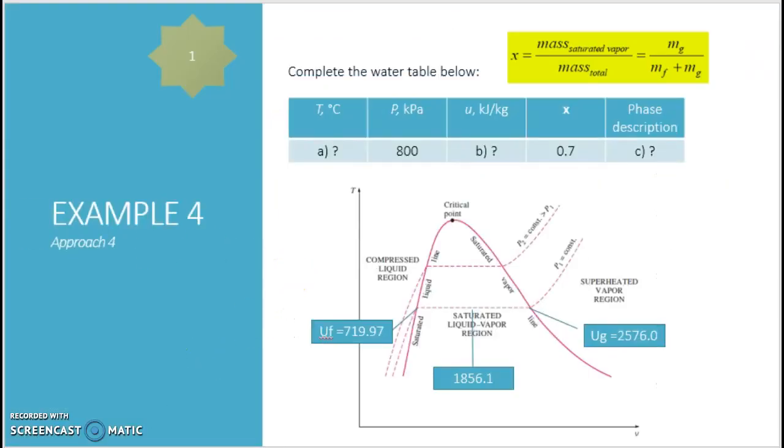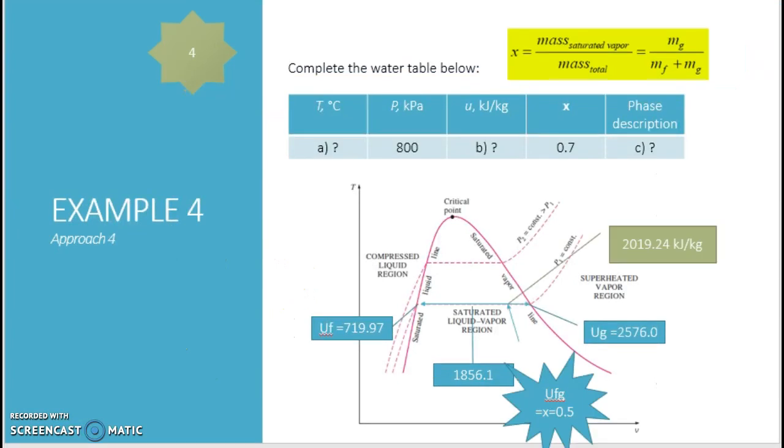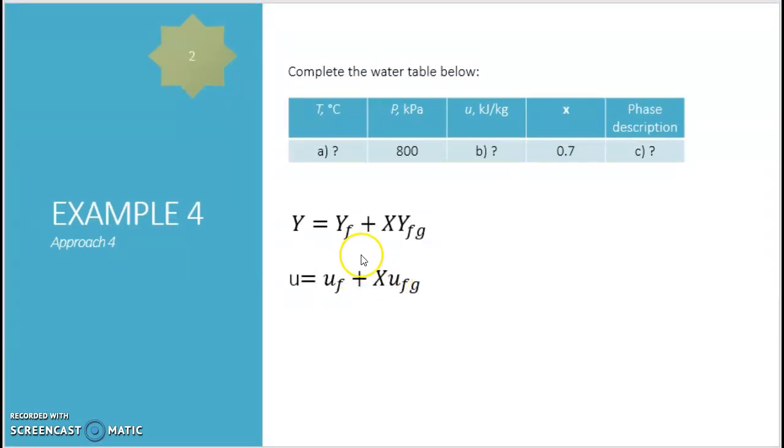Step 2. What you will need to do is you need to make use of this general equation. Depends on what type of extensive property you are looking for. Is it internal energy, entropy, or specific volume. So you are going to change this Y into the extensive properties that you are looking for.